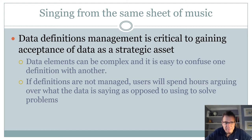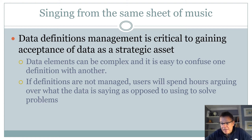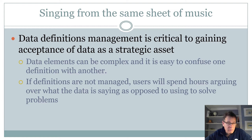Everyone needs to be singing from the same sheet of music. This is critical to gaining acceptance of data as a strategic asset, because data elements can be complex. They can be related to each other but not always. You can think you have something and it's different. You can have something which may change over time without understanding that. Systems may come from multiple places and they may not agree with each other. If definitions are not managed properly, users will spend hours in meetings arguing over what the data is saying, as opposed to using it to actually solve problems.